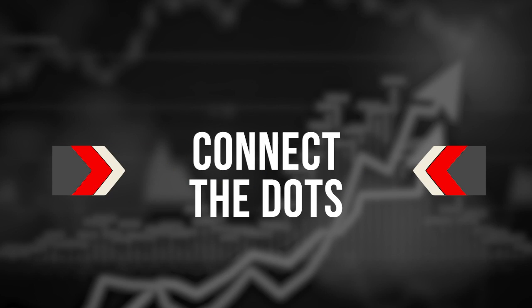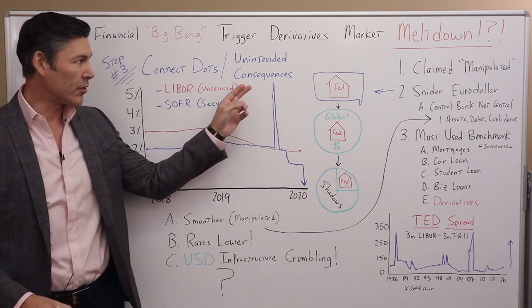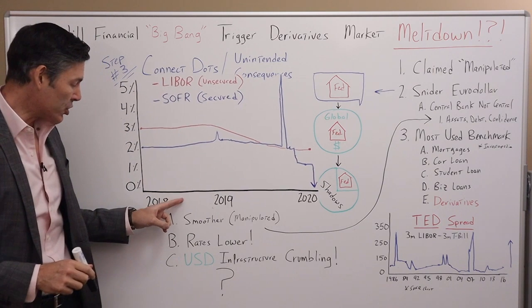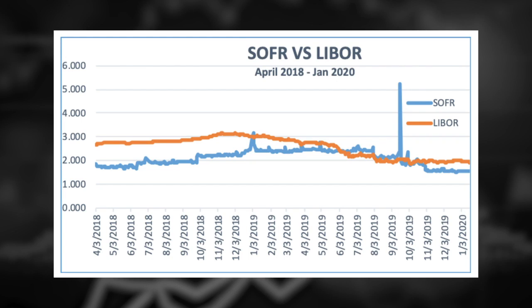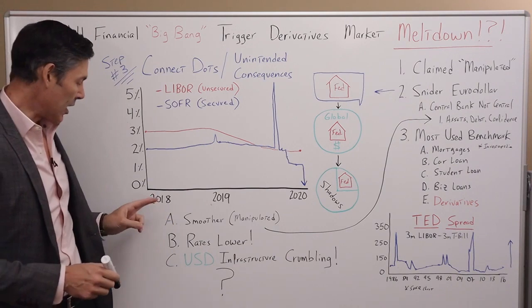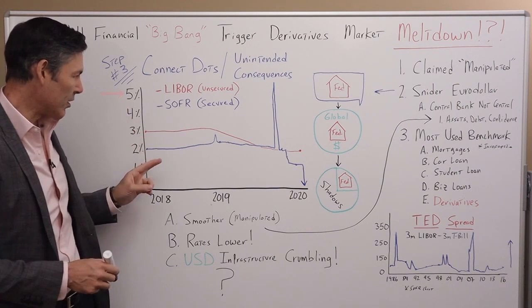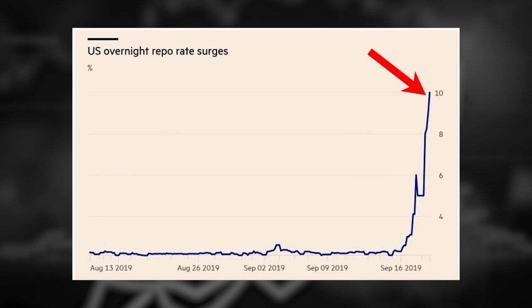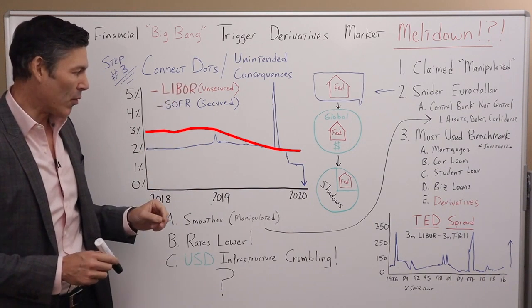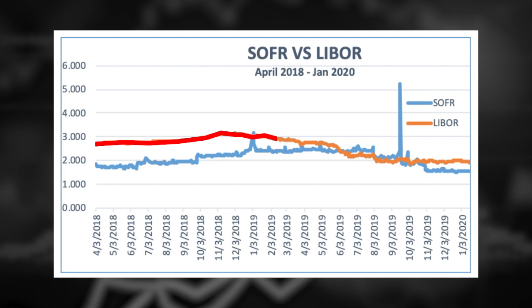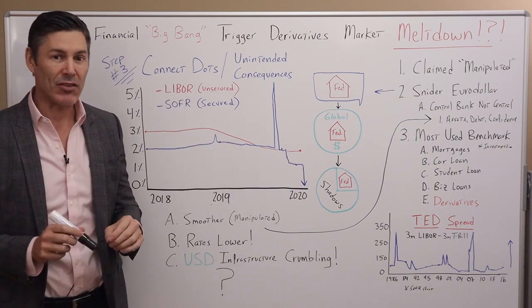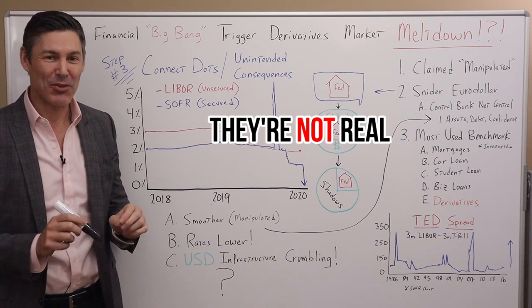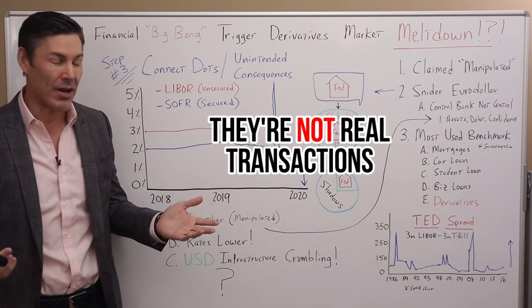Step number three: it's time to connect the dots and go over some potentially catastrophic unintended consequences. Let's start with this main chart from 2018 to 2020. This is LIBOR and SOFR. It goes from 0% up to 5%. The blue line is SOFR, which is going to mimic the repo chart we went over earlier. The red line is LIBOR. The first thing you can notice is the LIBOR rate is very smooth — that's what the banksters are telling the guy on the phone that they'd be willing to lend to. They're not real transactions; it's just some guy's opinion that could be made up.